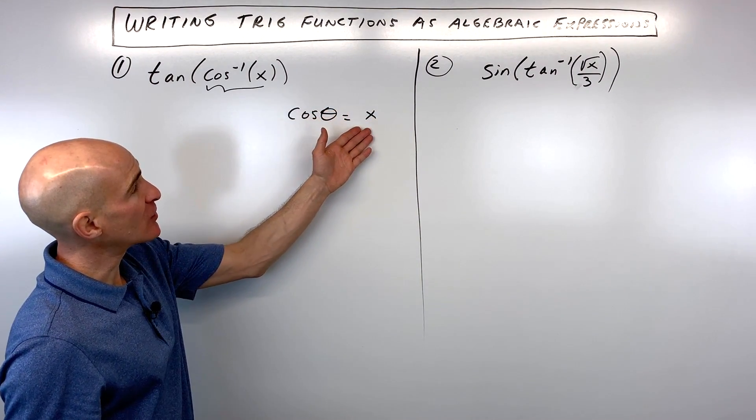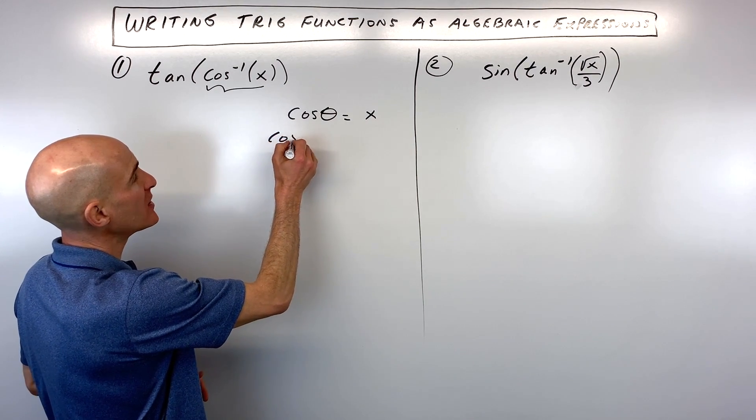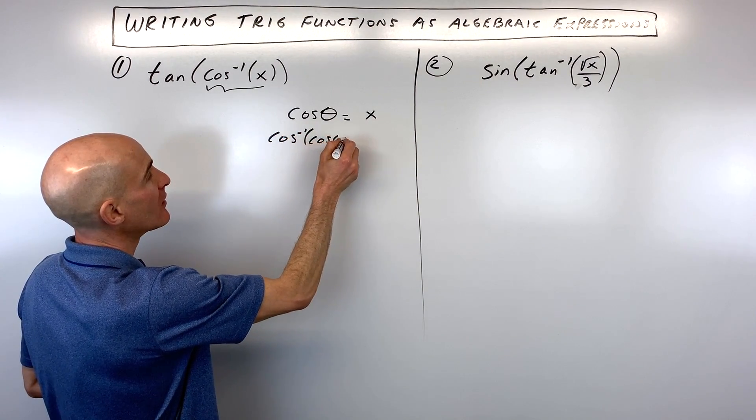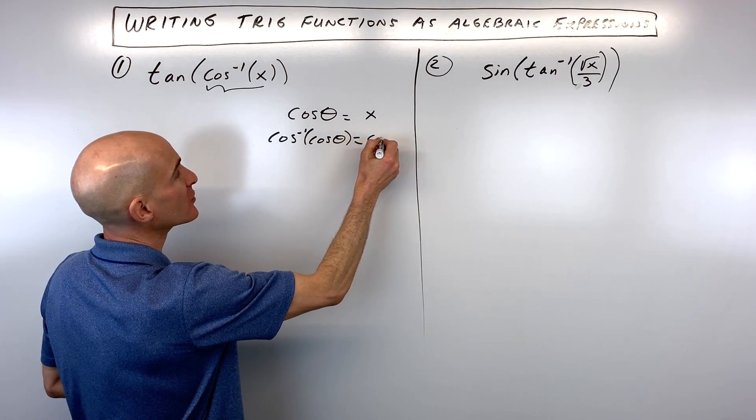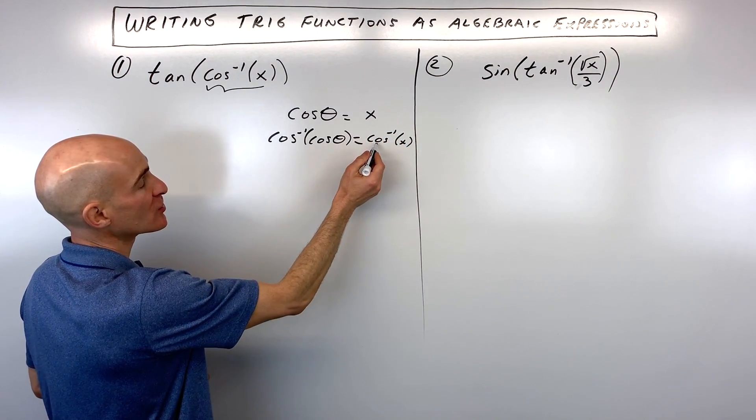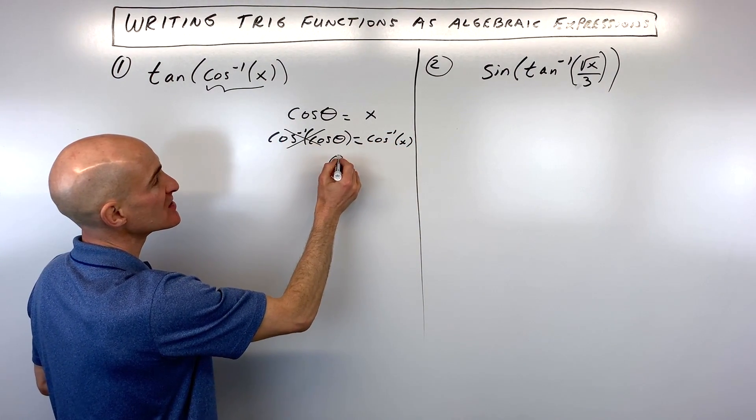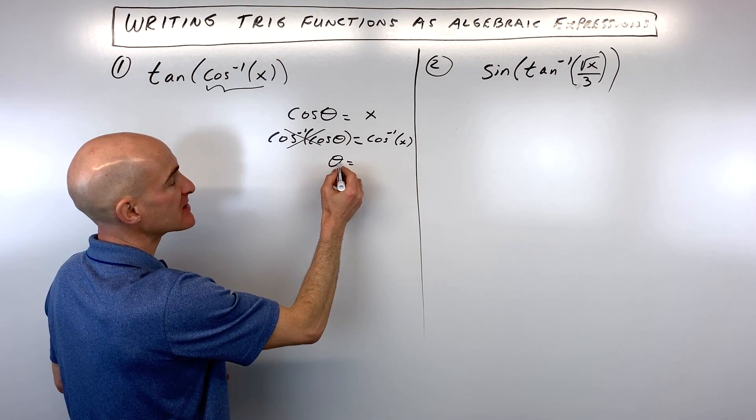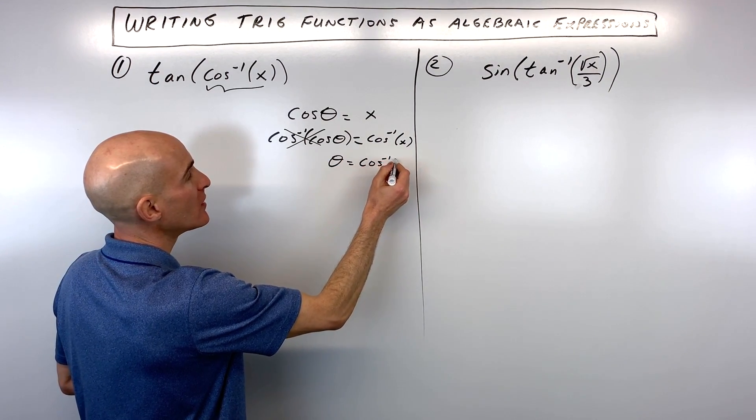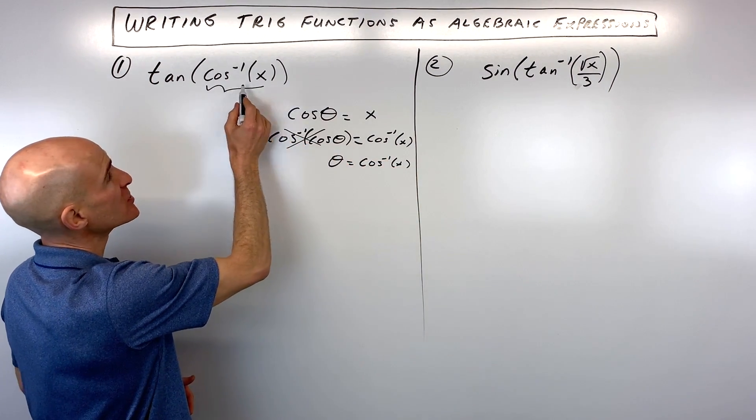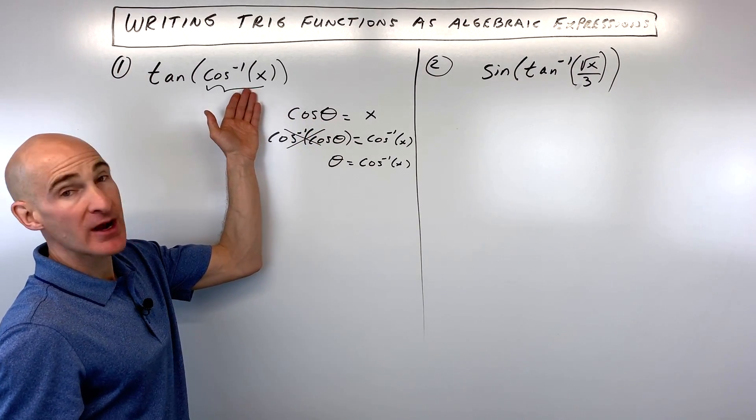So you can see if you take the cosine inverse of both sides of this equation, cosine inverse of cosine theta equals cosine inverse of x. You can see I just took the cosine inverse of both sides. These are inverses. That gives us our angle by itself, theta, which is equal to cosine inverse of x. So I just wanted to show you this is just another way of writing this.